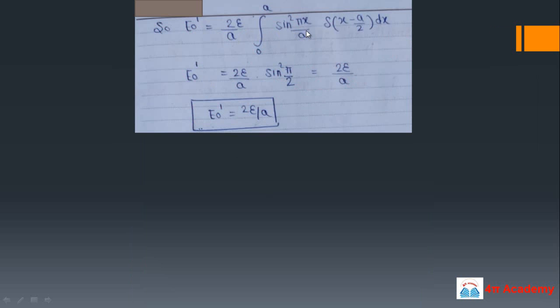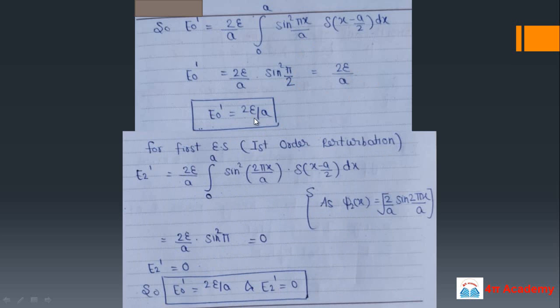For the ground state (n = 1), the wave function is χ_1 = √(2/a) sin(πx/a). Substituting into the formula, we get E_1' = (2/a) ∫₀ᵃ sin²(πx/a) × ε·δ(x − a/2) dx. Applying the delta function property at x = a/2, we get sin²(π/2) = 1, so the first-order correction to the ground state energy is 2ε/a.